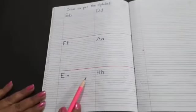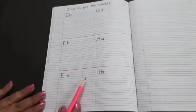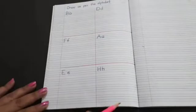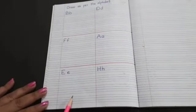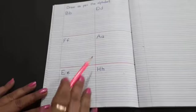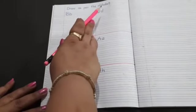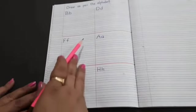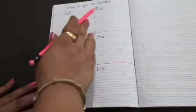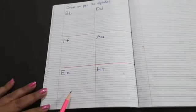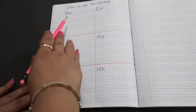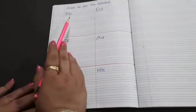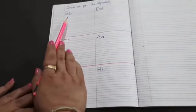After writing in order A to H, tell your mama to prepare the second page as I have prepared. Write the heading 'Draw as per the alphabet.' Make one standing line and two sleeping lines and make six boxes, and write the alphabet as I have written on this page.